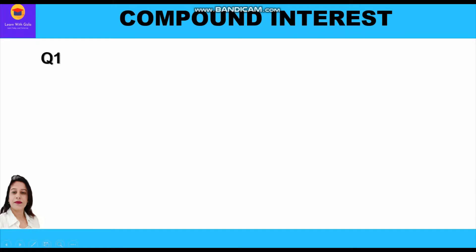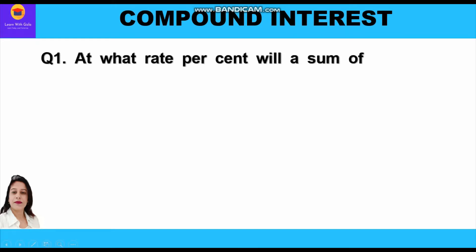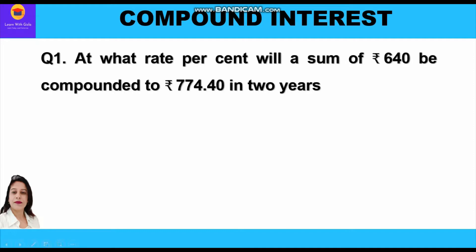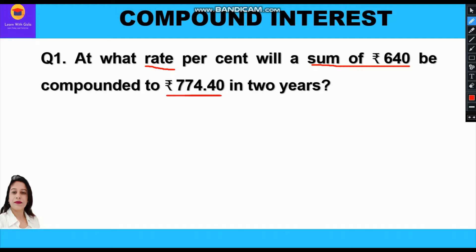Let's start with the first question. At what rate percent will a sum of rupees 640 be compounded to rupees 774.40 in two years? They are asking at what rate percent — sum means principal, so principal is rupees 640 — be compounded to rupees 774.40. This is our amount, in two years. So time period is two years and we have to find the rate of interest.